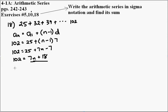Let's continue. If we subtract 18 from both sides of the equation, I get 84 is equal to 7n. And if I divide 84 by 7, I get 12. Dividing both sides of the equation by 7, n is equal to 12. So we're looking for 12 terms, the sum of 12 terms.